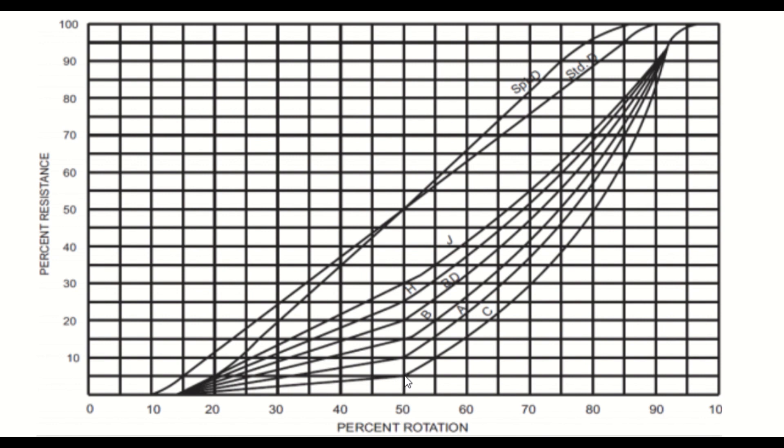On a 250K pot, turn it to 5, the resistance theoretically should be 125K, nice and simple. As you can see here, when they start to curve up like that, that is an audio taper curve. At 50% rotation, there are quite a few different options to choose from.